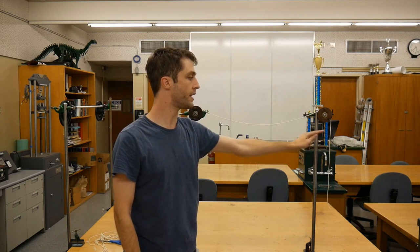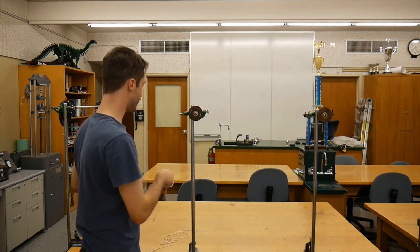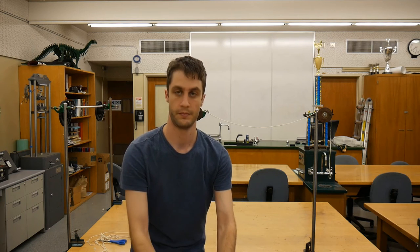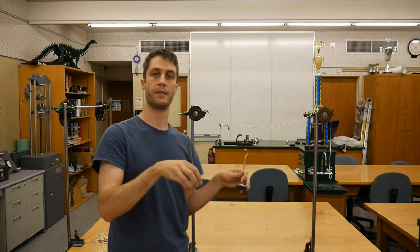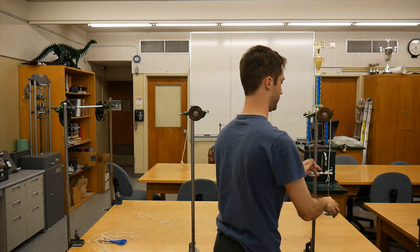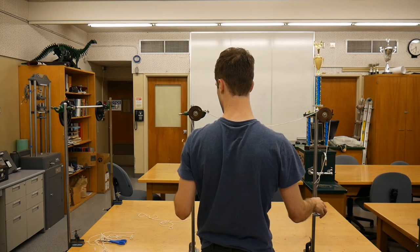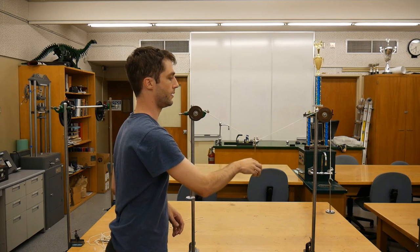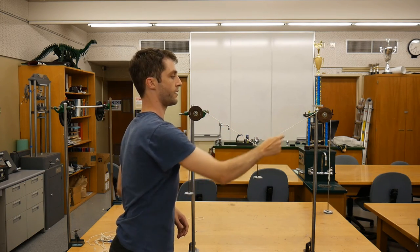The third and last part of the experiment, cut a length of string that can drape across both pulleys, with plenty of extra length to spare. Tie both ends into loops, so that you have a place to hang the masses. Get three 50 gram masses and three hangers and attach them. Take two of your 50 gram hangers and attach them to either end of the string. Place your third hanger in the middle of the string, and observe the angle that's produced.